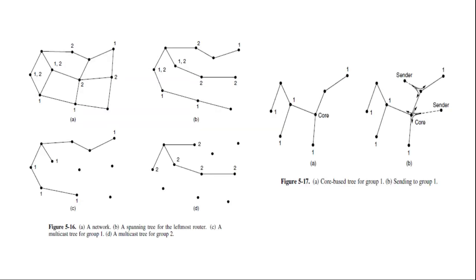Here in figure 5.16 figure C gives the spanning tree for the leftmost router to send to group 1, and the spanning tree for the rightmost router to send to group 1 will look quite different as packets will head directly for group members rather than via the left side of the graph.